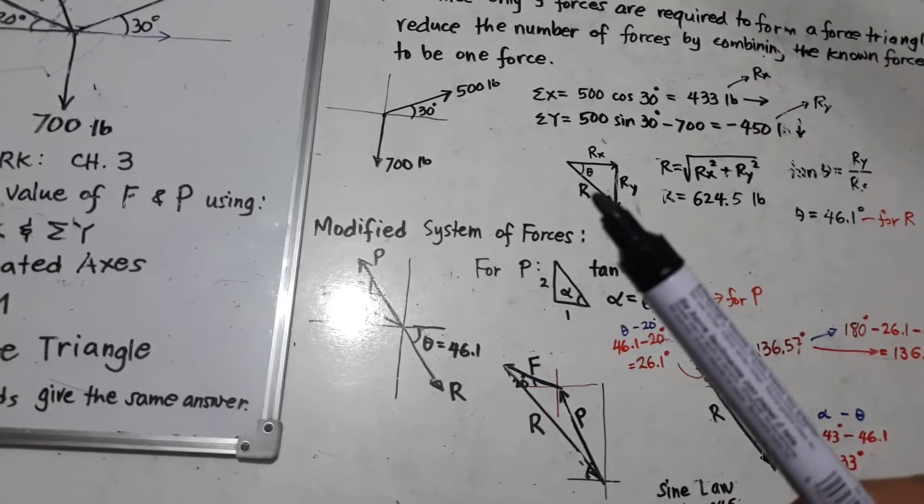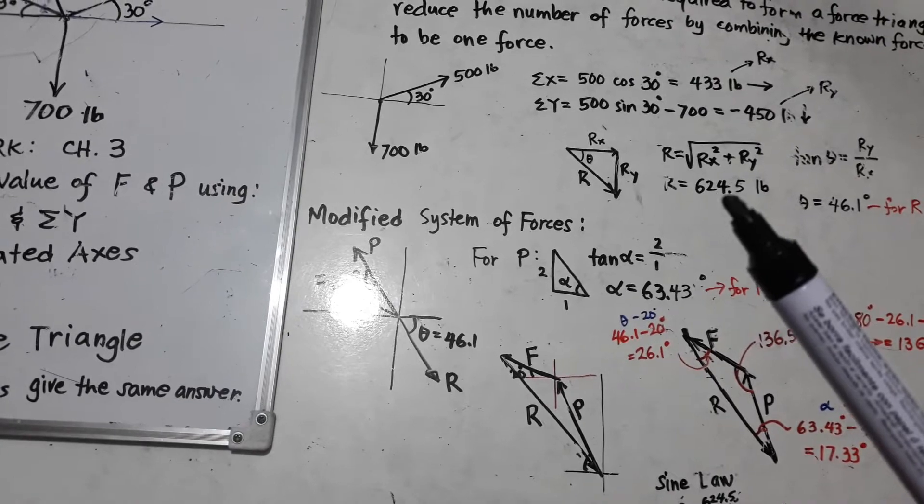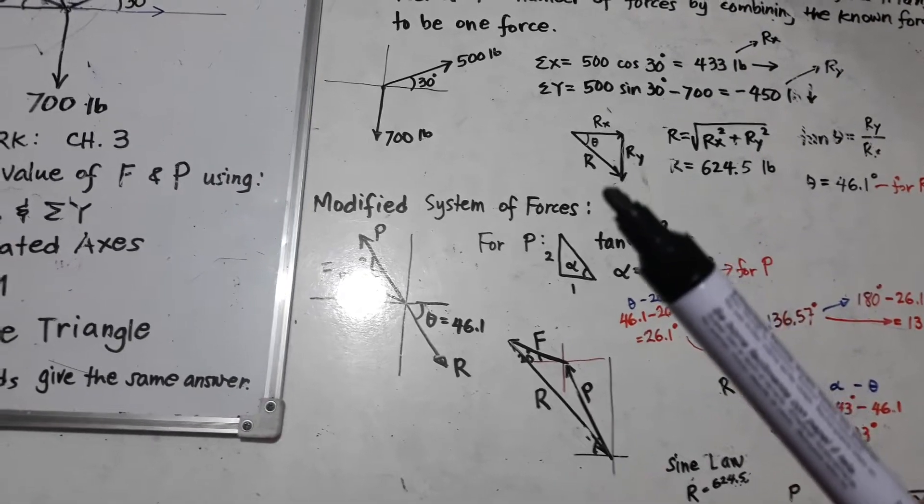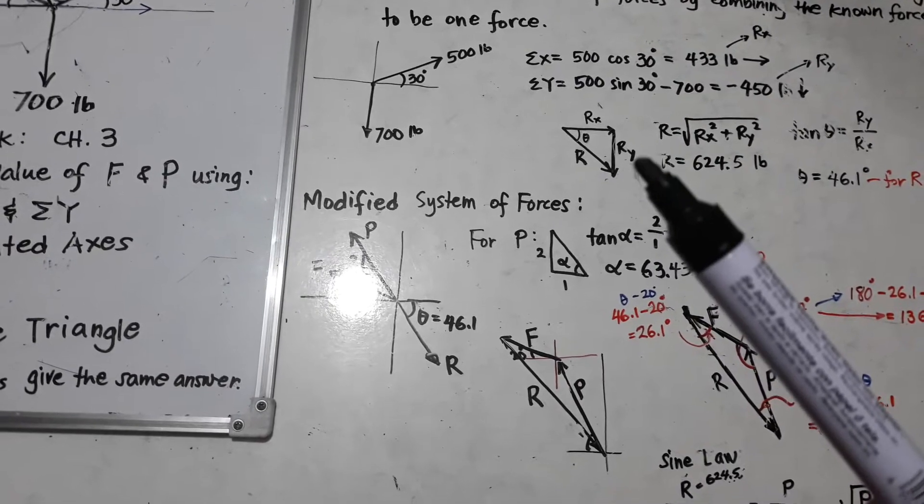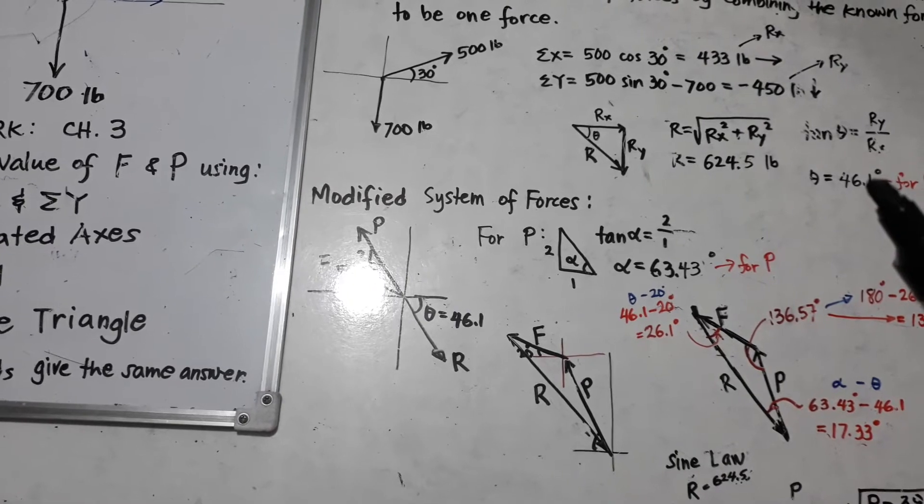To solve for R, we can use the Pythagorean theorem. R is equal to 624.5. And to solve for this angle theta, that will be the tangent of R Y over R sub X. So, theta here is 46.1 degrees.